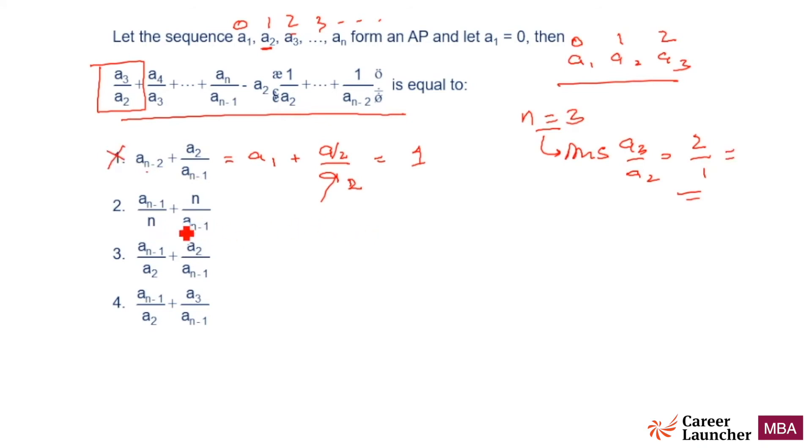What about choice 2? Choice 2 is An-1 will be A2, n-1 is A2 upon 3, because N is 3, plus 3 upon A2. And what is A2? A1, this is A2. A2 is 1, so which is equal to 1 by 3 plus 3, which is equal to 3.33. We want the value to be 2, wrong choice.